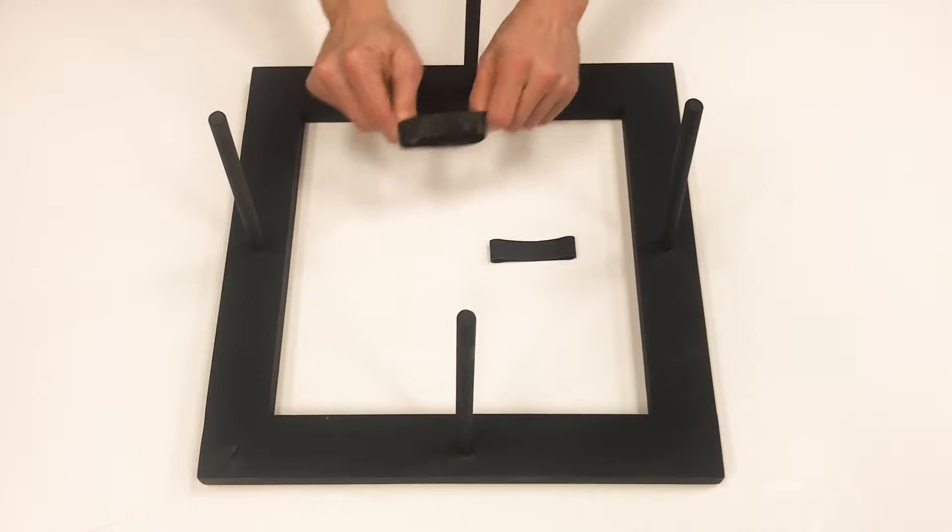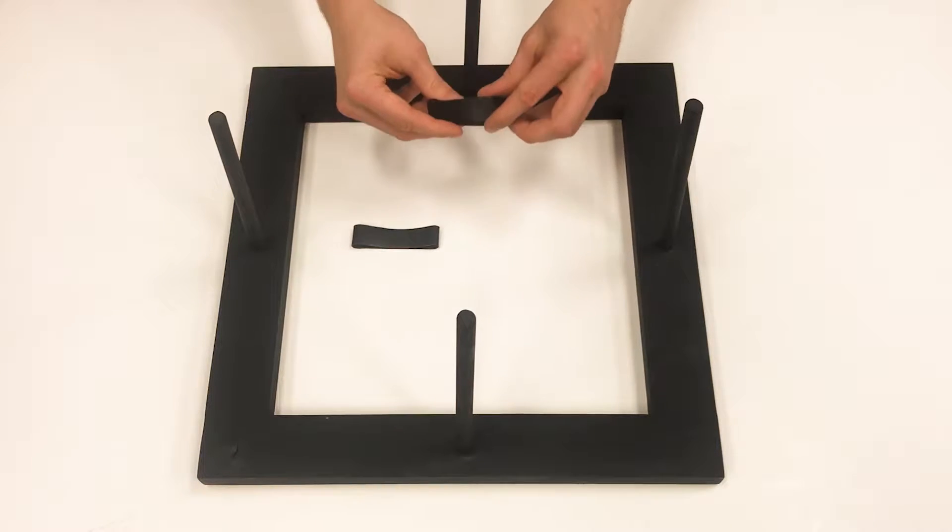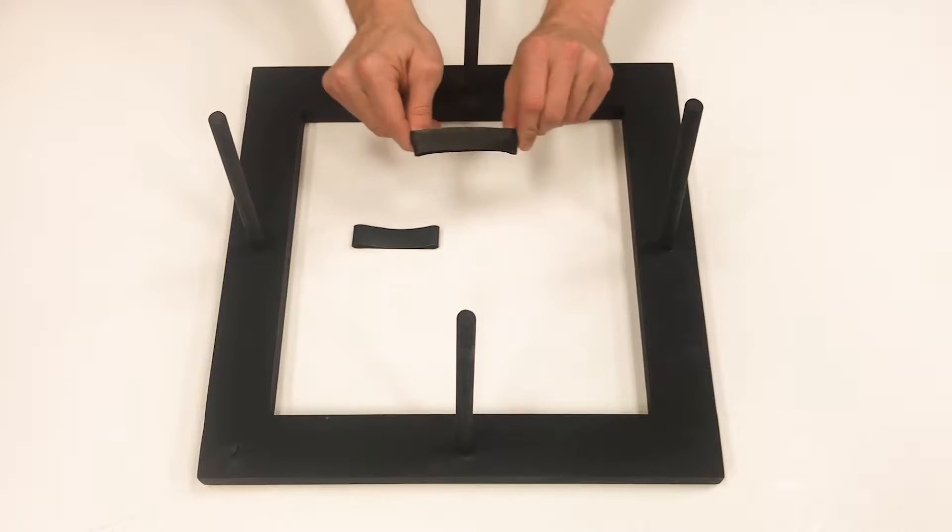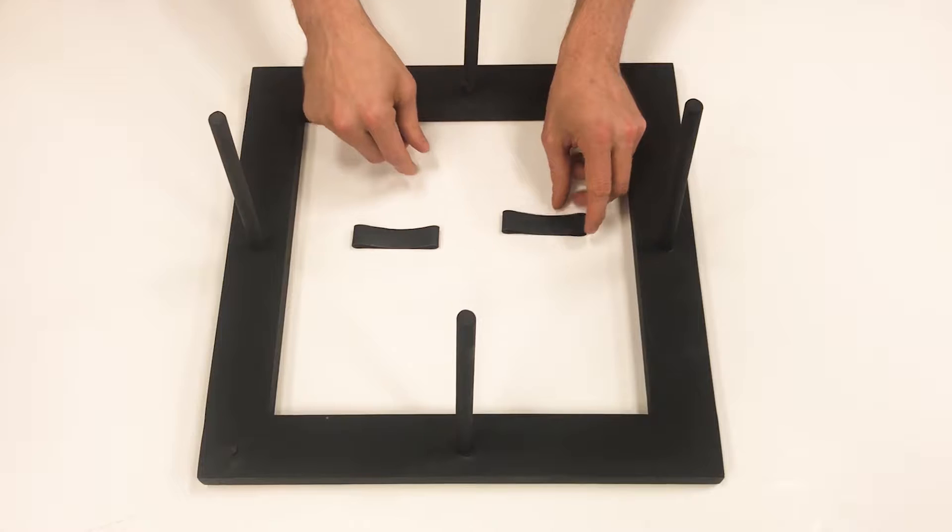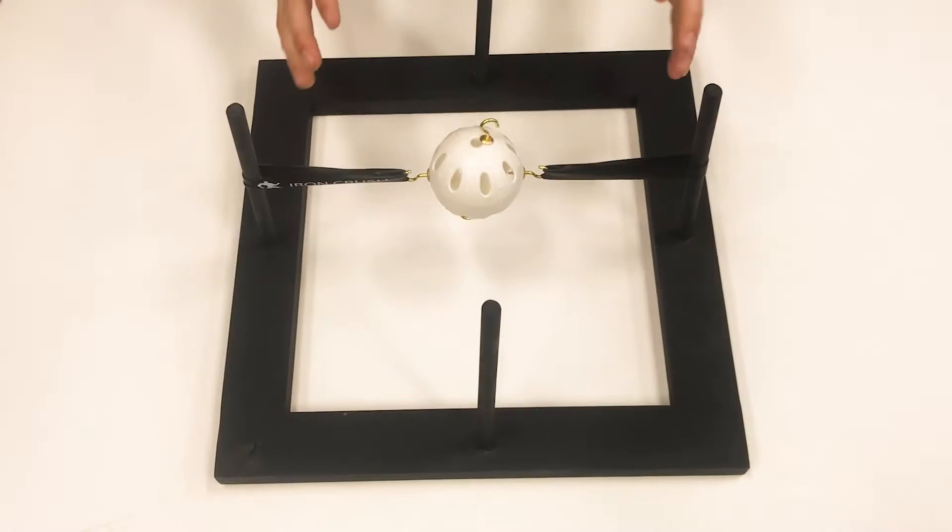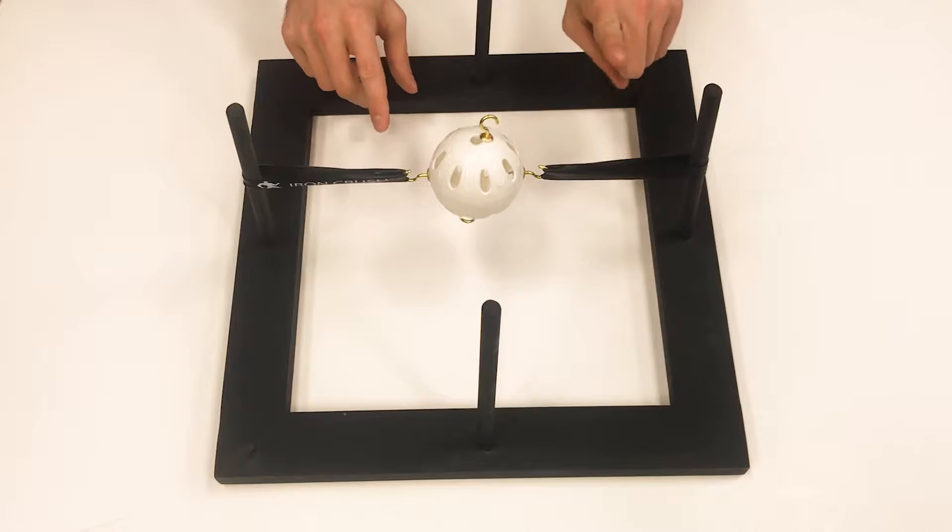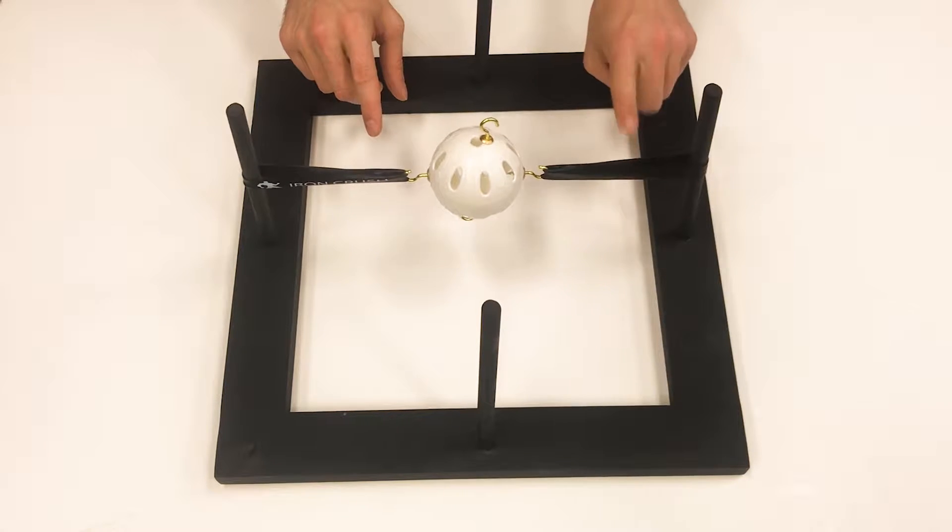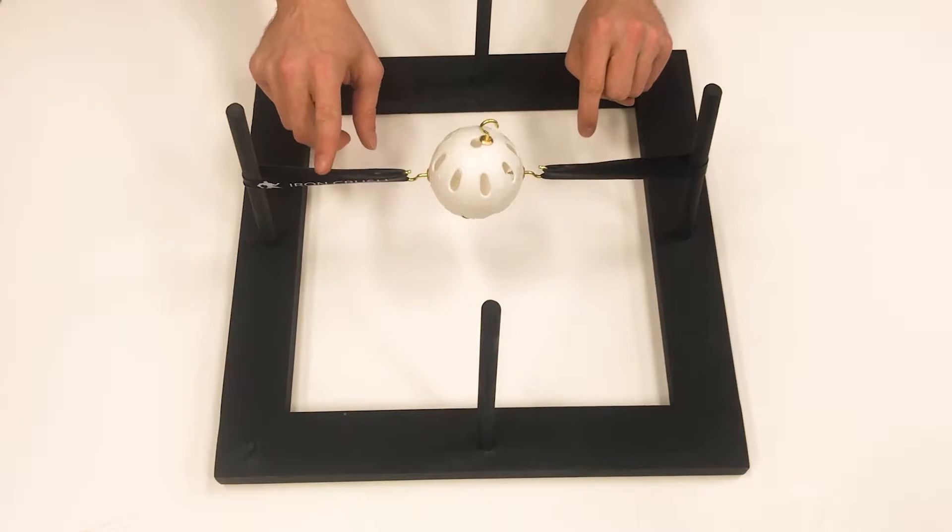As you can see, this band and this band have very equal amounts of tension. We're going to show you how that affects the joint. Now this is going to represent how much tension is being put on a joint. This band has the equal amount of tension as this band.